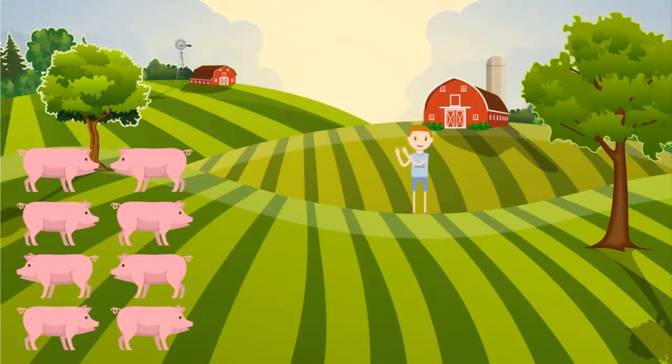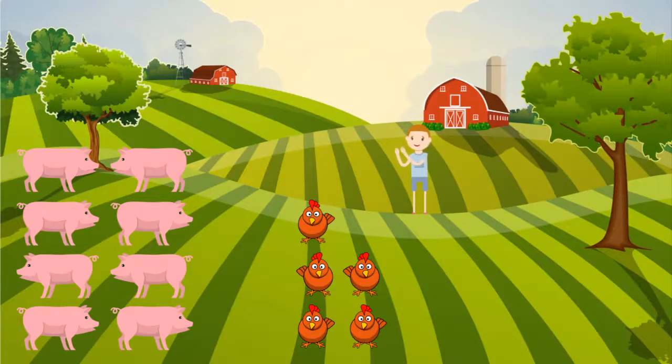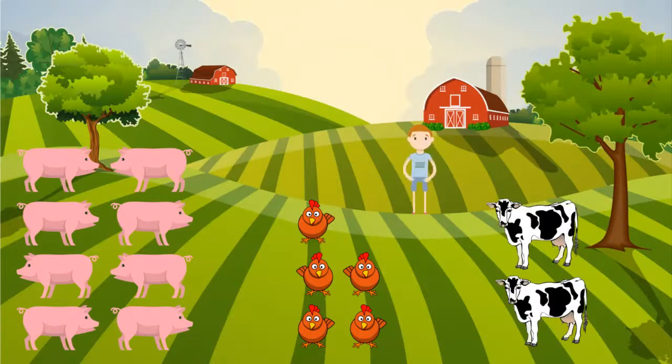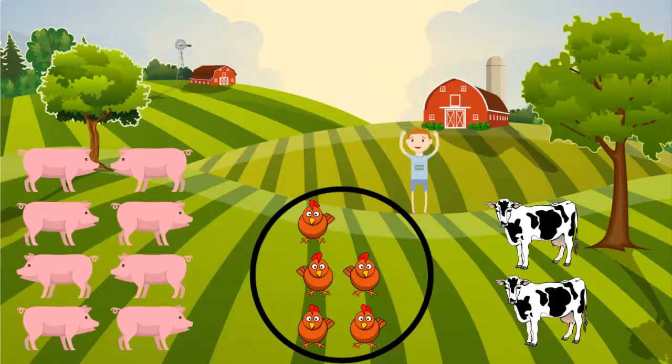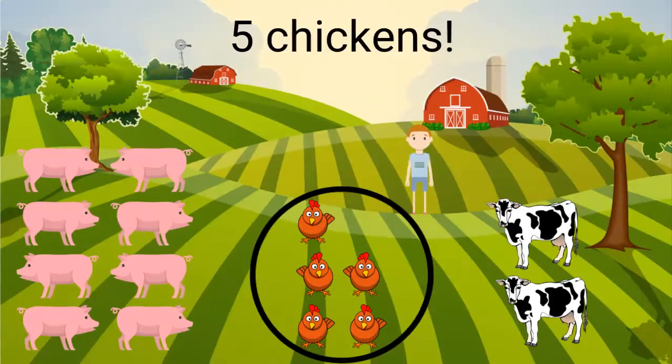Great idea! We can separate the groups. Let's put the pigs here, the chickens here, and the cows over there. Now we can count how many chickens my friend has. How many chickens does she have? Yes, she has five chickens.